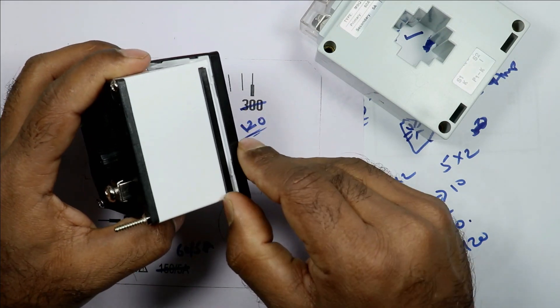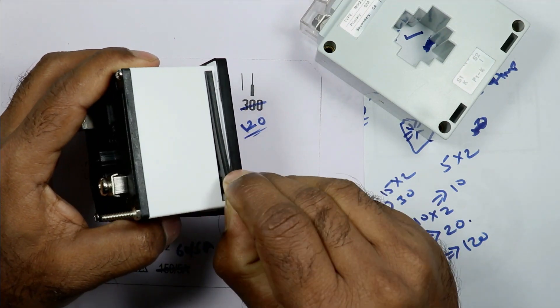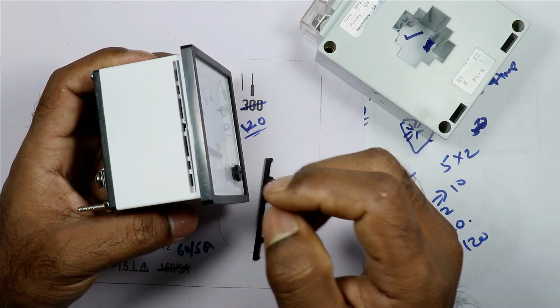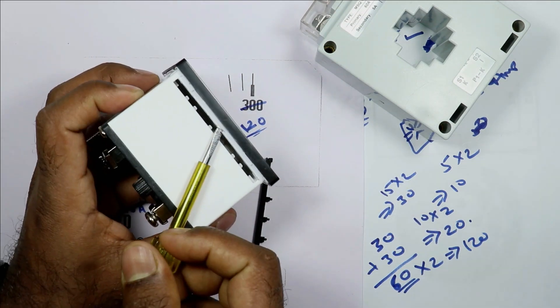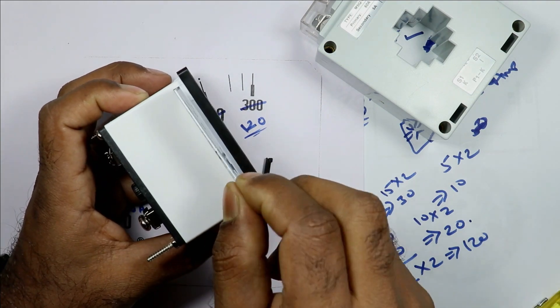Friends, we can remove this side cover without taking out glass. But in some ammeter, we have to take out glass. If required, open this completely. Here you can directly take this out and can change the scaling.